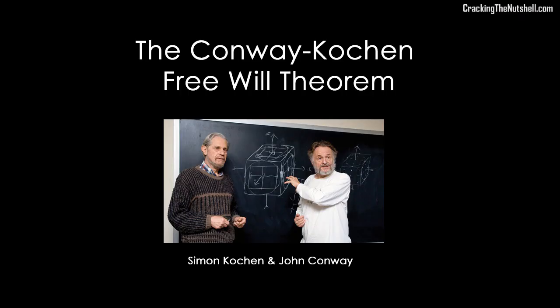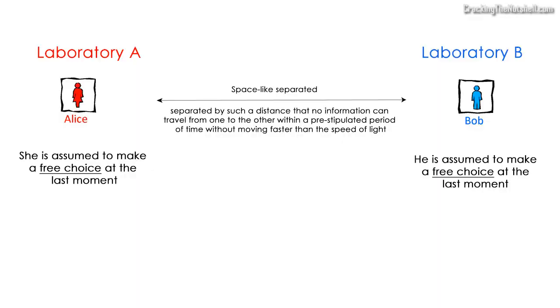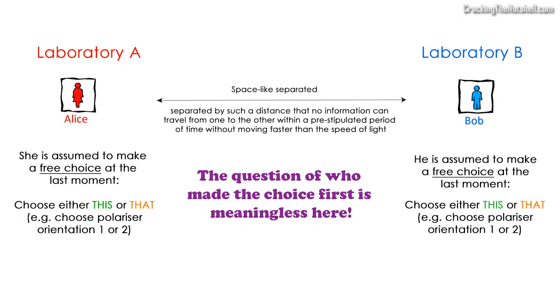Coming back to Conway and Kochen's free will theorem, in order to understand what it's all about, let's go back to the same experimental setting introduced in my previous video when talking about Bell's theorem. We have two experimenters, Alice and Bob, in two different laboratories. The laboratories are space-like separated, which means that no information can travel from one to the other, according to Einstein's theory of relativity, within a pre-stipulated period of time unless it was travelling faster than the speed of light. In other words, the fact that Alice and Bob are space-like separated means that the question of who made the choice first of what to measure is meaningless here, because Alice and Bob's choices are not in each other's future or past light cones.